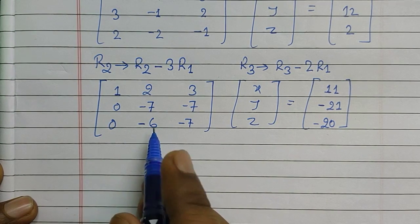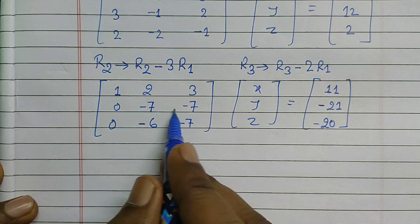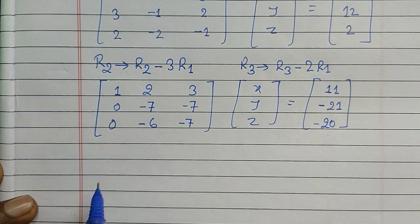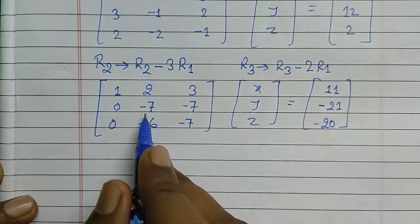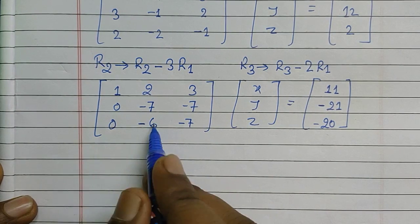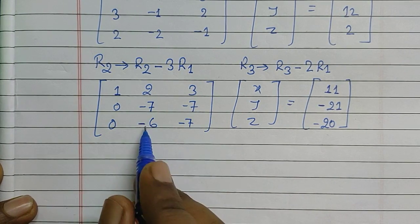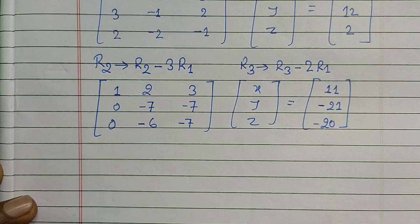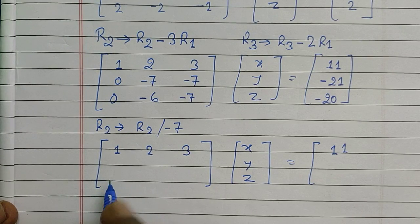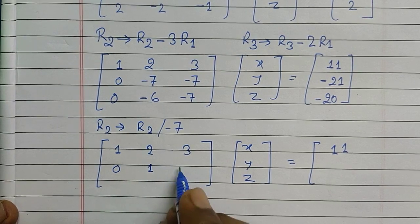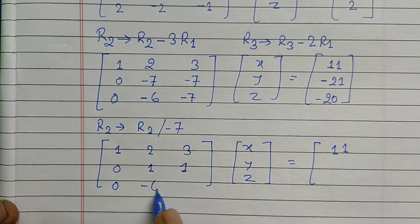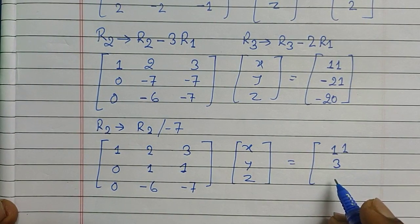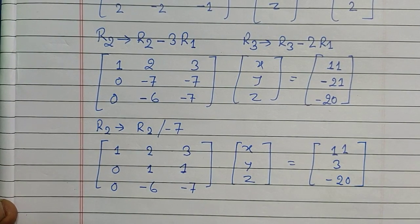Next, to make the pivot in R2 equal to 1, we divide R2 by minus 7. This gives R2 as [0, 1, 1 | 3]. The third row remains [0, -6, -7 | -20] for now, and R1 is unchanged at [1, 2, 3 | 11].